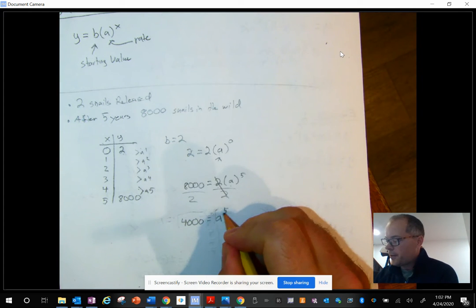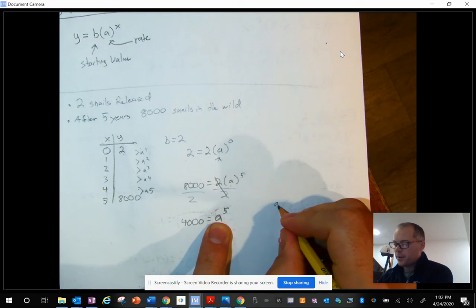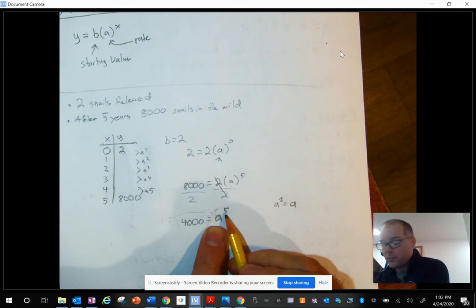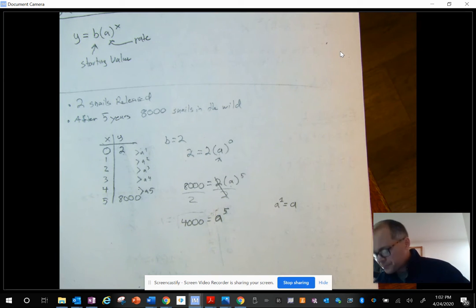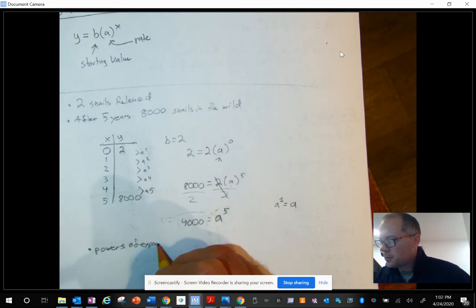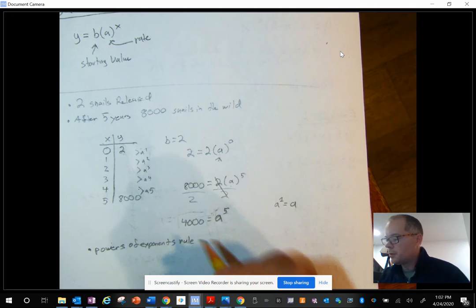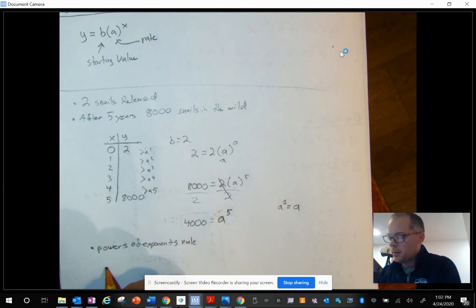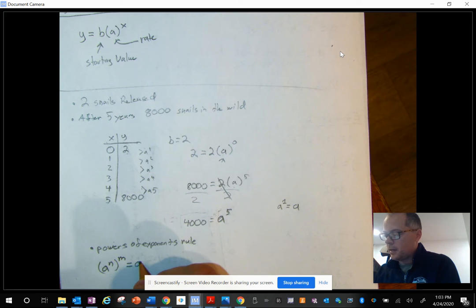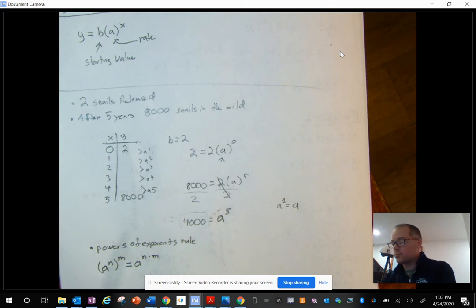So to get rid of this fifth power, if we want this just to be A, isn't A to the first power the same as just A? So if we get this to a 1, if we figure out a way to get this to a 1, we could do that on both sides. And that would kind of solve our problem. So I'm going to use the powers of exponents rule. And that says that if I take a number, A to the n power, and I raise that to the m power, then what I get is A to the n times m. So just the exponents are multiplied together if I do that. So I'm going to use this rule to figure this out.